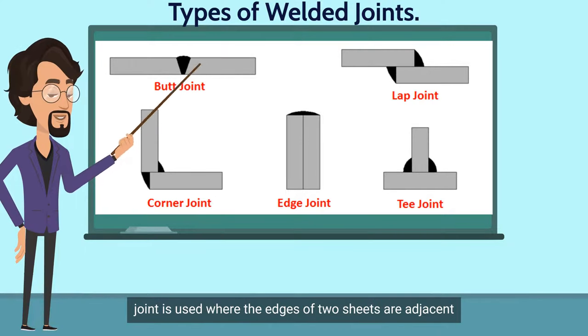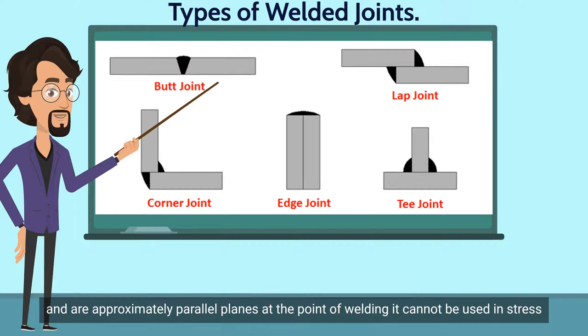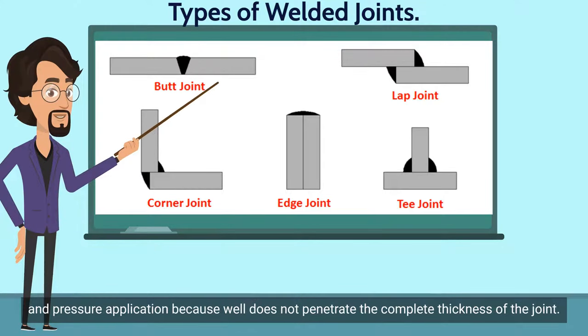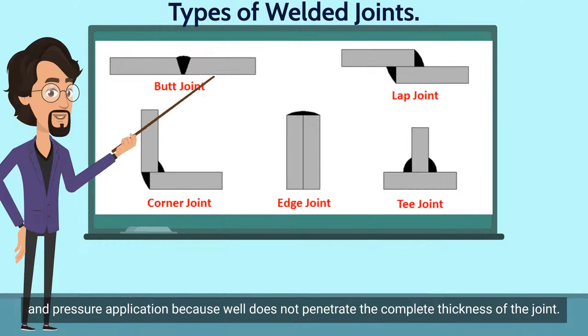The joint formed by welding the edges of two parts together is called an edge joint. This joint is used where the edges of two sheets are adjacent and approximately parallel at the point of welding. It cannot be used in stress and pressure applications because the weld does not penetrate the complete thickness of the joint.